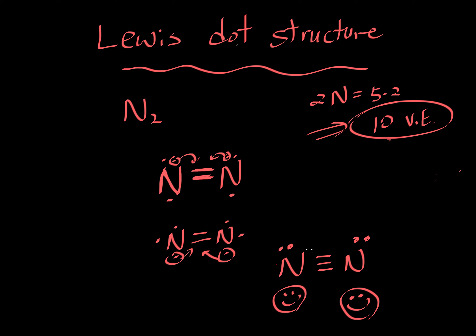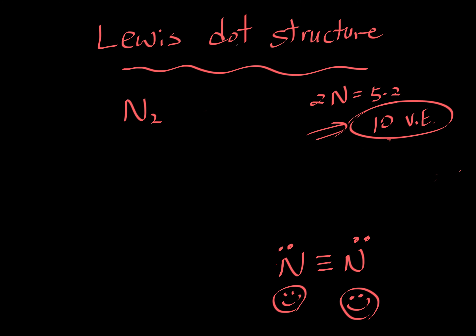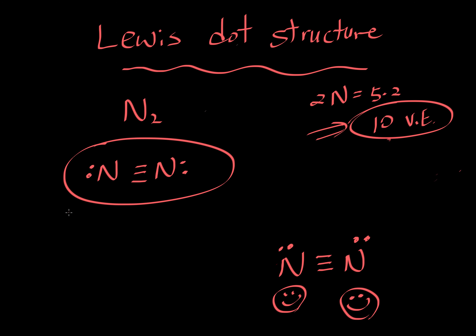Do we have ten electrons? One, two, three, four, five, six, seven, eight, nine, ten. We have satisfied both the number of valence electrons in use and the octet rule. So the Lewis dot structure for nitrogen gas is a triple bond, with two lone pair electrons on each nitrogen. This is the Lewis dot structure for nitrogen.